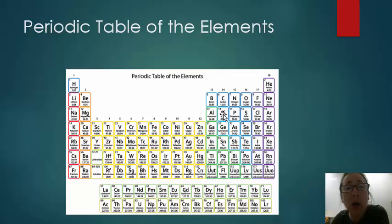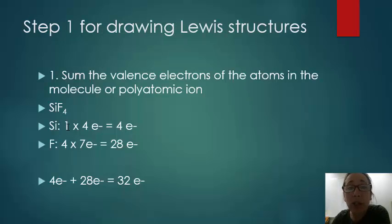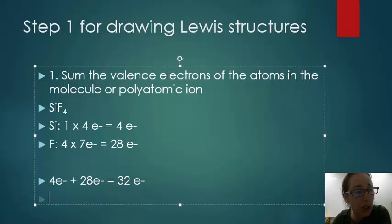When I find silicon on the periodic table, silicon has four valence electrons, and when I find fluorine on the periodic table, it's right here in the halogen family, with seven valence electrons. So each silicon contributes four valence electrons for a total of four, and each fluorine, I have four of them, contributes seven valence electrons for a total of 28. And when I sum those, four electrons plus 28 electrons, I get 32. So that's step one.